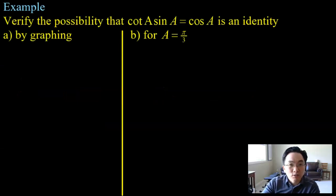So our example, our only example for this video, is to verify the possibility that cotangent A times sine A is actually equal to cosine A. And we're going to do this two ways, one by graphing and one where we actually approach it algebraically. So by graphing, what we'll need, of course, is our graphing calculator.